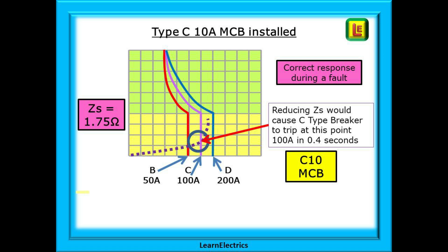Of course, in real life, it is often difficult to reduce the ZS, so we must check this first before changing types. But you never know, you might be lucky, the actual ZS might already be less than 1.75 ohms.